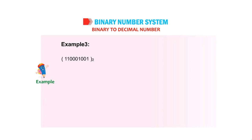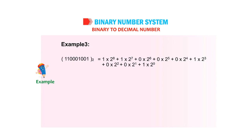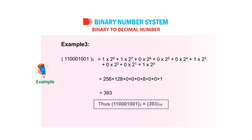Another example: 110000001 base 2 = 1×2⁸ + 1×2⁷ + 0×2⁶ + 0×2⁵ + 0×2⁴ + 0×2³ + 0×2² + 0×2¹ + 1×2⁰ = 256 + 128 + 0 + 0 + 0 + 0 + 0 + 0 + 1 = 393. Thus, 110000001 base 2 equals 393 base 10.